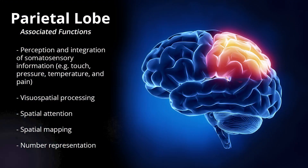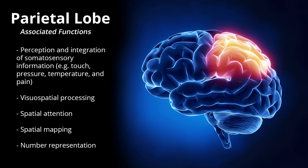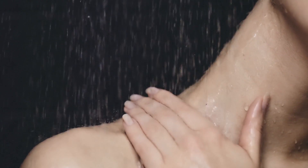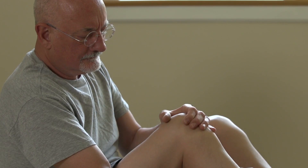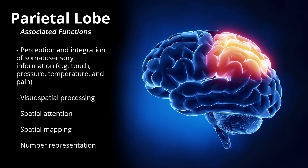Functions associated with the parietal lobe include perception and integration of somatosensory information — for example, touch, pressure, temperature and pain — visuospatial processing, spatial attention, spatial mapping, and number representation.